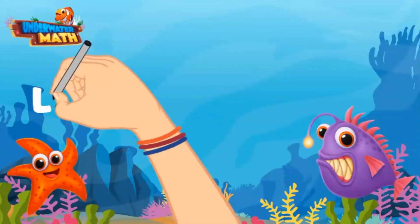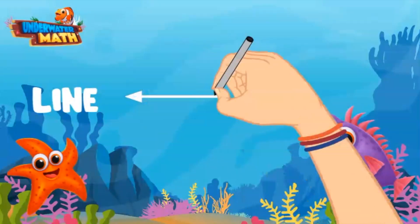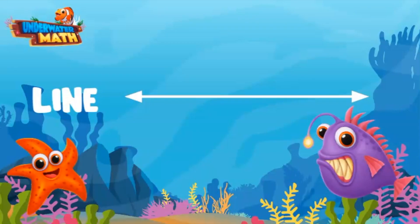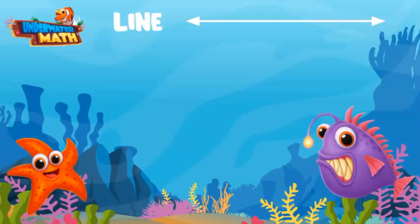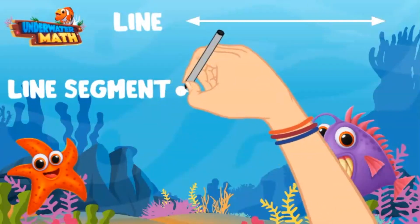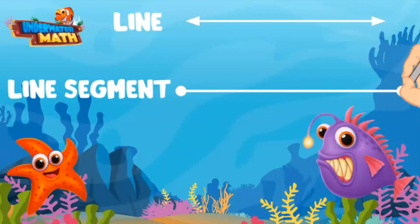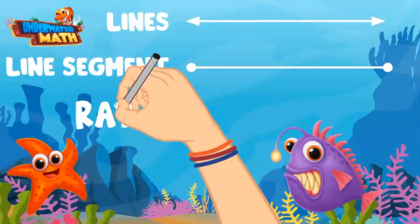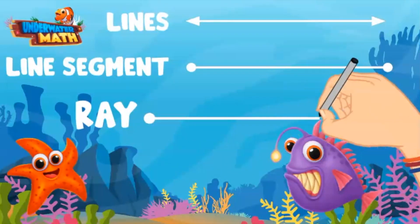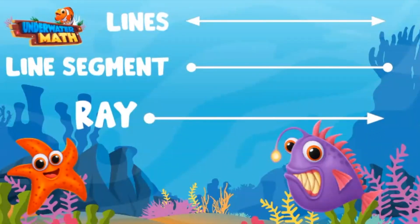First and foremost, we have the line. A line continues in both directions forever. We show this by putting arrows on either end of the line. Next, we have a line segment. A line segment is just part of a line. It has two endpoints at each end, which we show by putting a point at either end of the line. Finally, and most importantly, we have the ray. A ray looks like a line, but it has an endpoint on one side and an arrow on the other side. It continues in one direction forever.